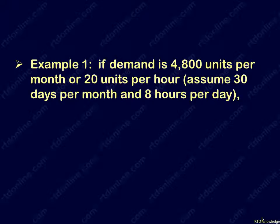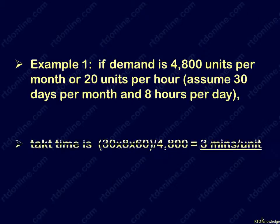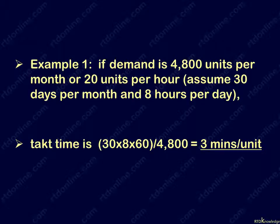If demand is 4,800 units per month or 20 units per hour — assuming 30 days per month or 8 hours per day — then the TAC time is 3 minutes per unit.